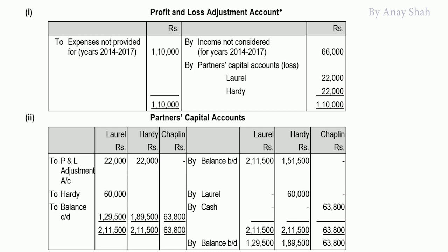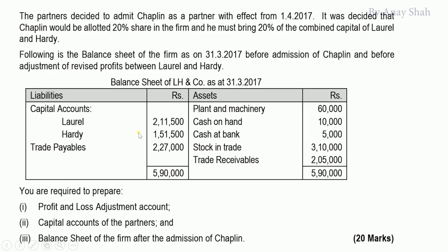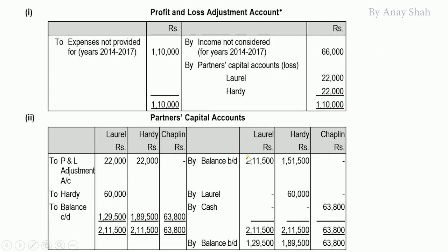The effect of 22,000 each is transferred to the partners' capital accounts. In the capital account, opening capital is taken from the balance sheet — L: 2,01,500 and H: 1,51,500. Then the P&L Adjustment loss of 22,000 each is debited to old partners equally (new ratio). Then other adjustments follow.